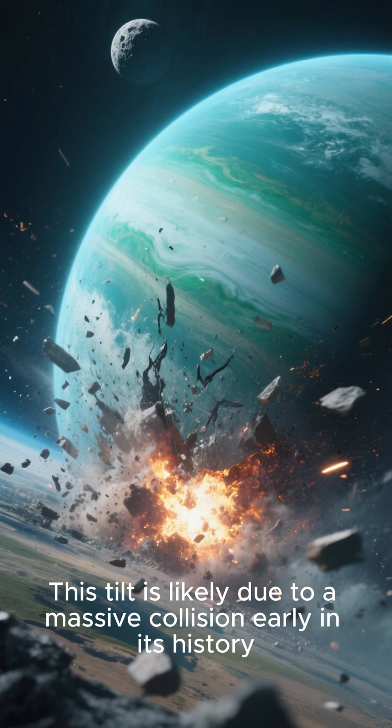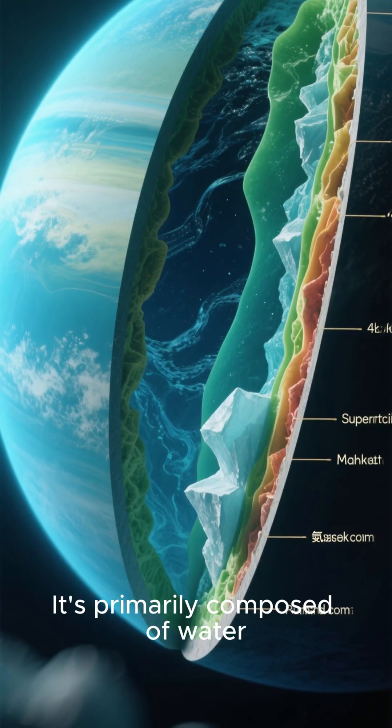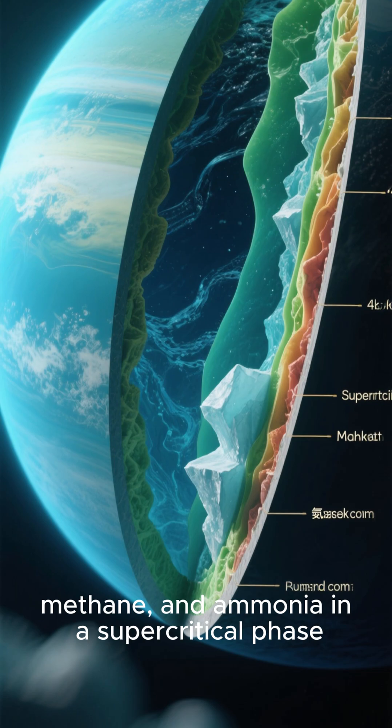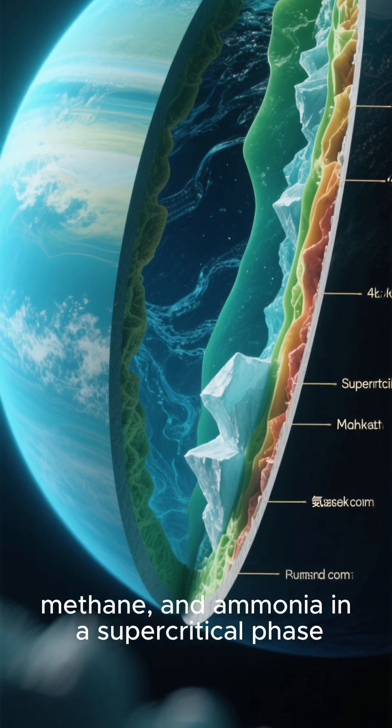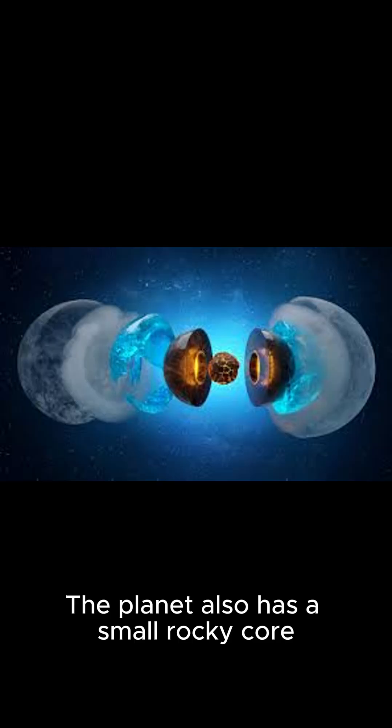It's the third largest planet in our solar system, about four times wider than Earth. It's primarily composed of water, methane, and ammonia in a supercritical phase, which astronomers refer to as ice. The planet also has a small rocky core.